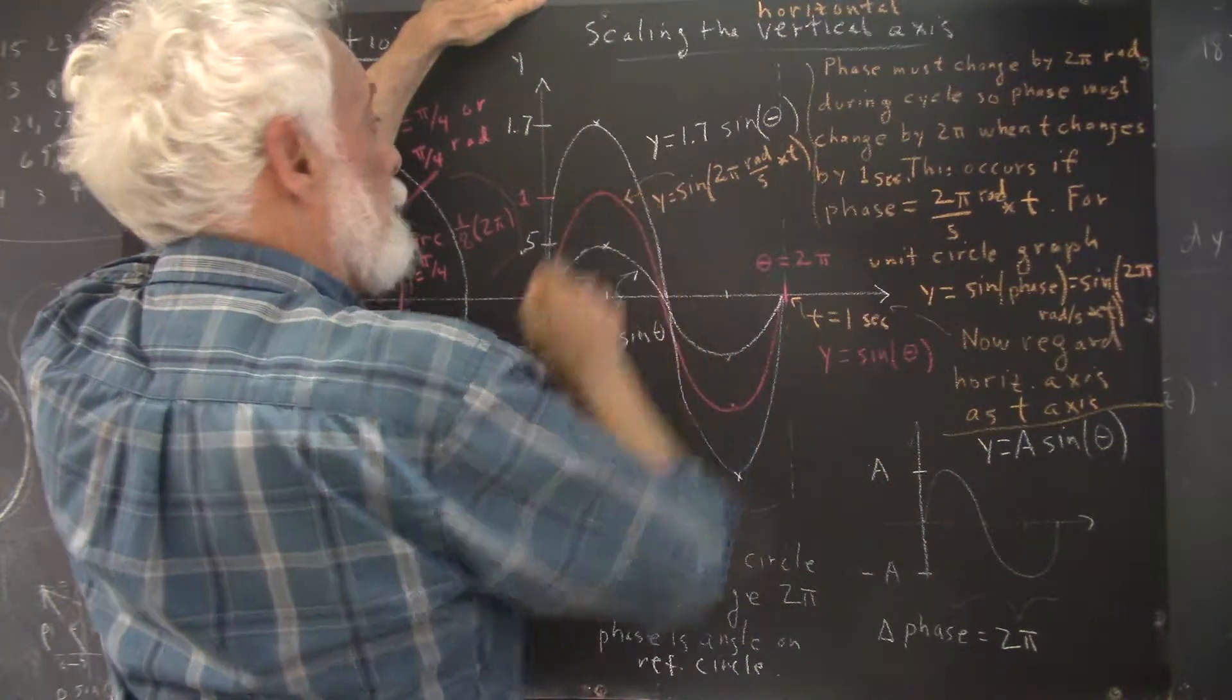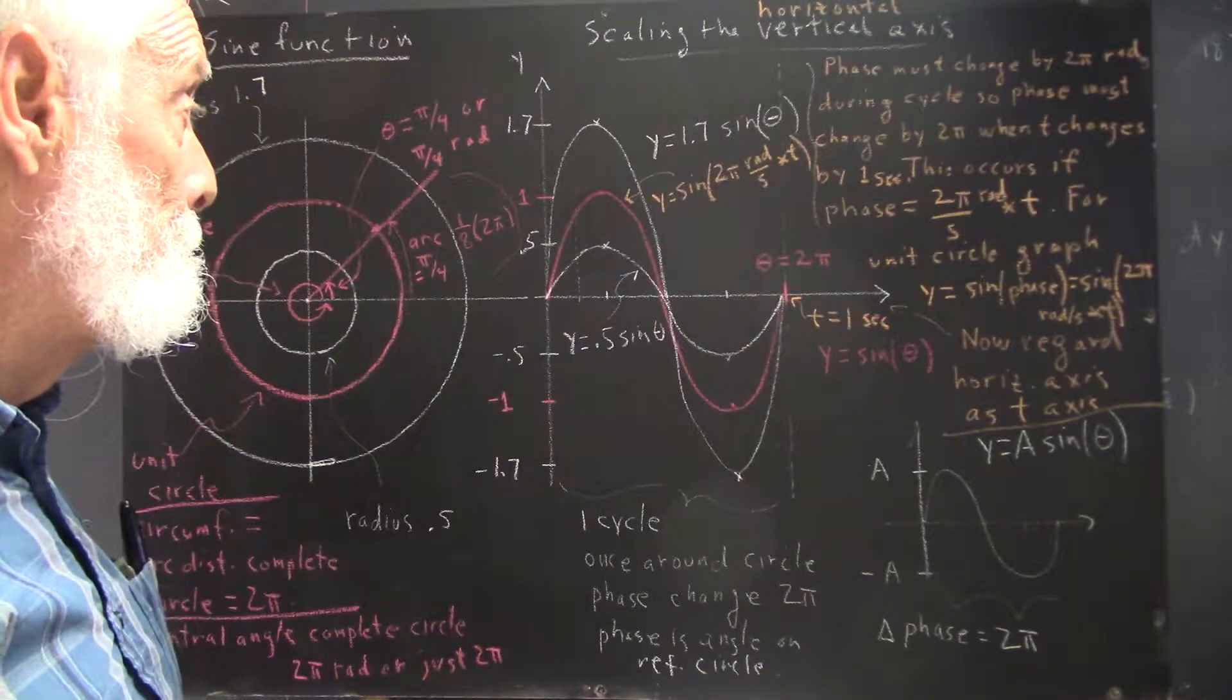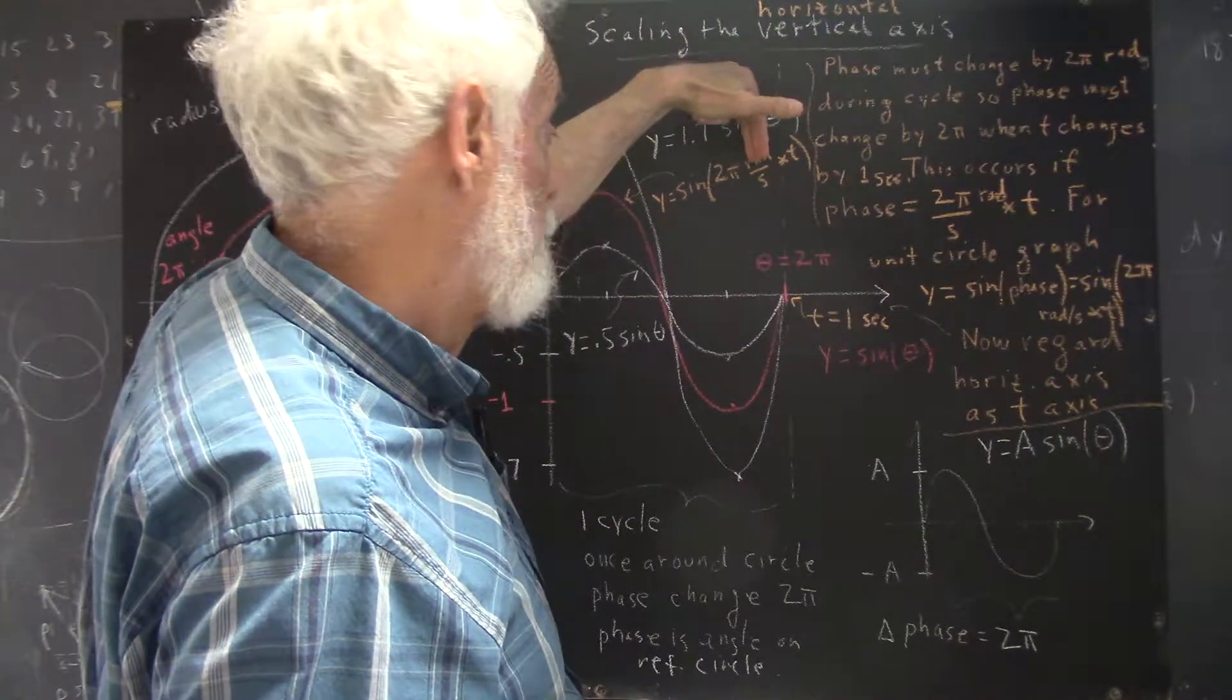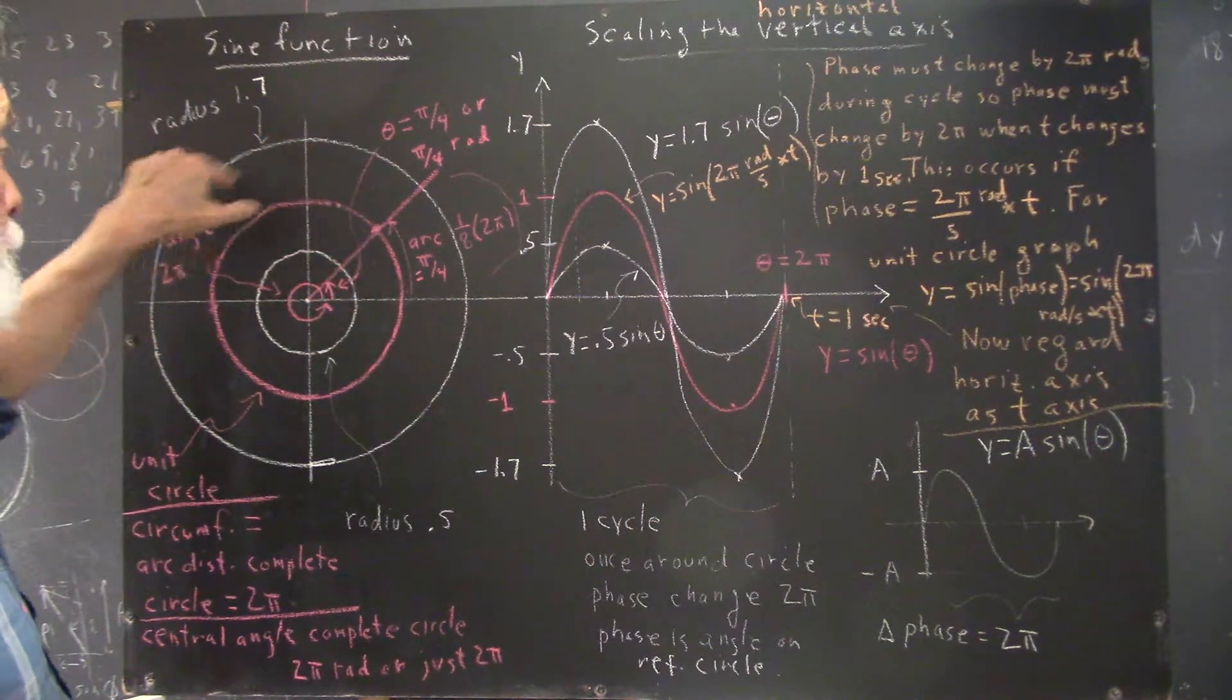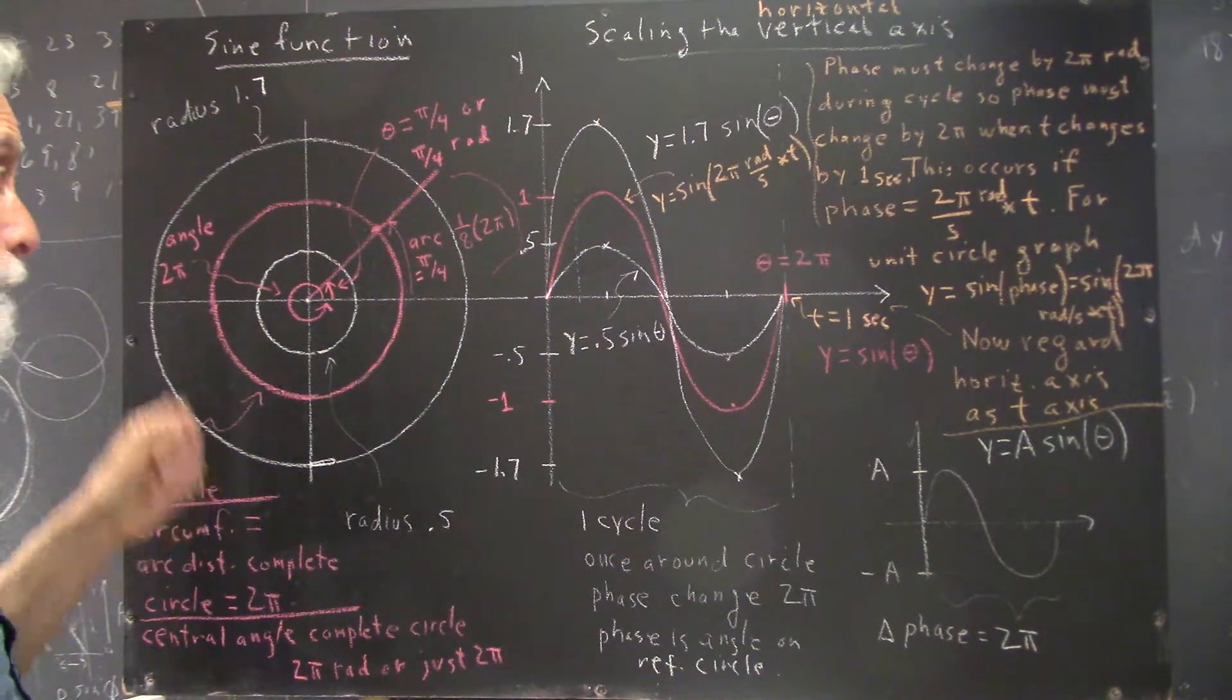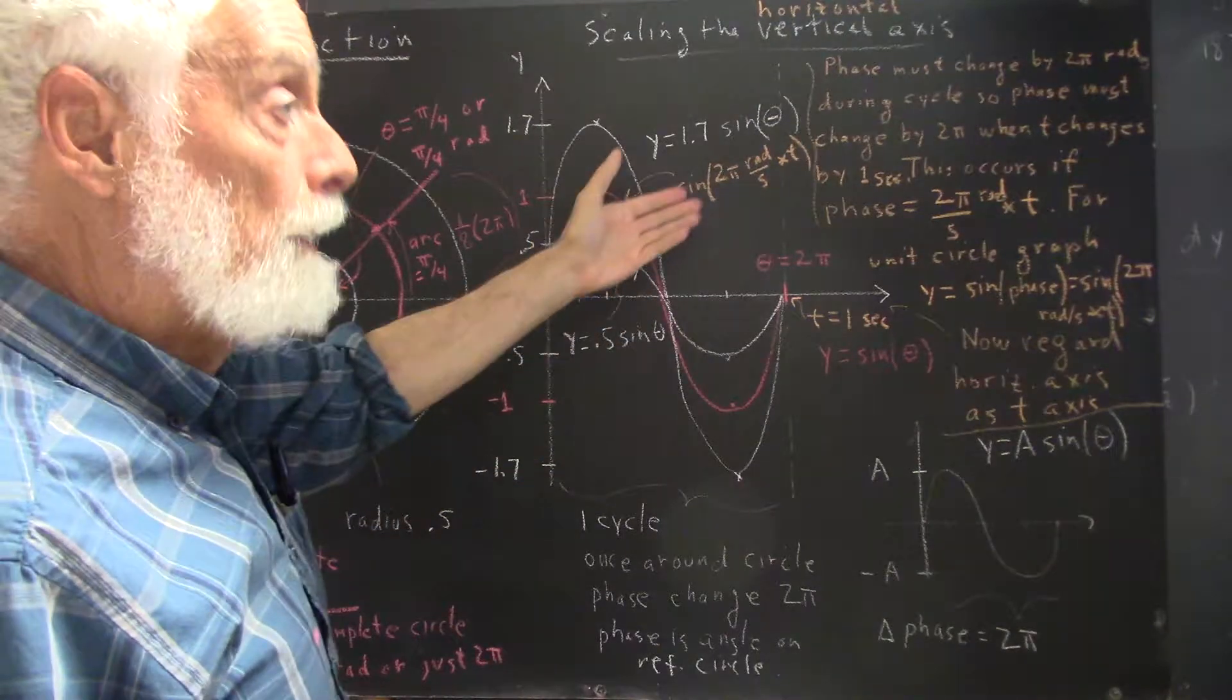That would correspond to our red graph. Again, we say that as t goes from 0 to 1 second, the 2π radians per second times t goes from 0 to 2π radians, completing a cycle, completing a turn, a complete revolution around the unit circle, so that the angle completes an angle of 2π. That's a lot to sort out, but you need to think about it and apply this until it becomes perfectly natural. Then you'll understand the sine function.